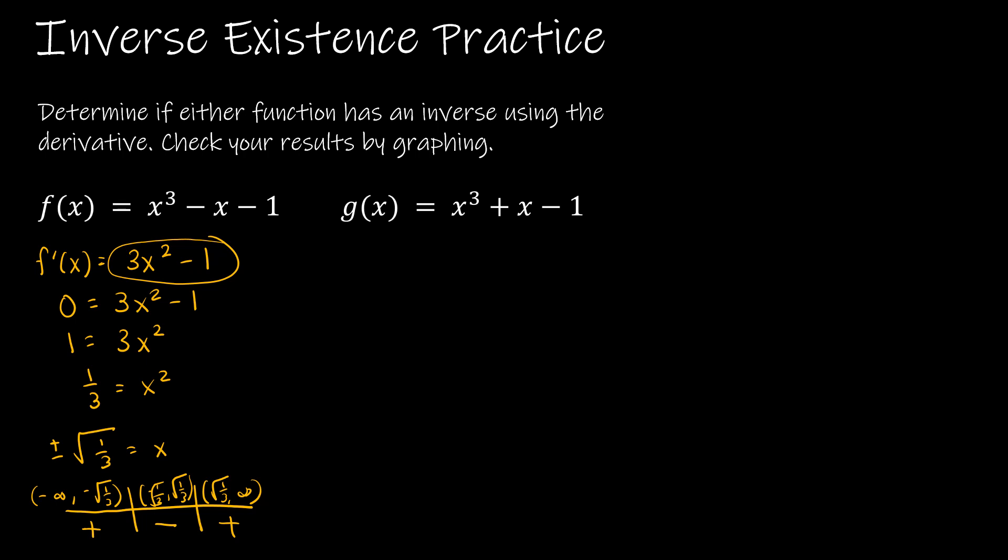So I can see that this is not monotonic and therefore no inverse. Because we know that if I graphed this, it's going to have a wiggle in the middle, it wouldn't pass the horizontal line test, and there's no inverse. Now, let's look at the second one.